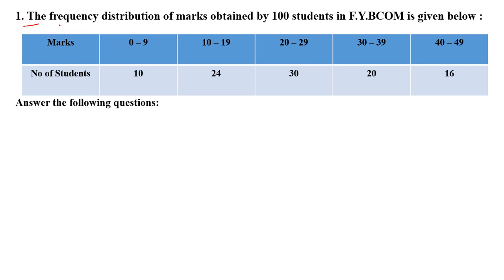The first question presents a frequency distribution table. The frequency distribution of marks obtained by 100 students in FYBCOM is given below. Marks are grouped as: 0 to 9 with frequency 10, 10 to 19 with frequency 24, 20 to 29 with frequency 30, 30 to 39 with frequency 20, and 40 to 49 with frequency 16.